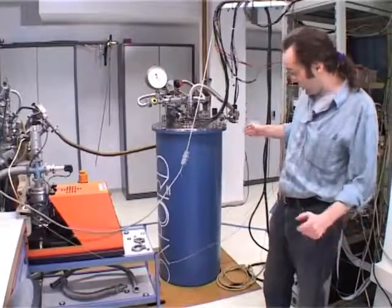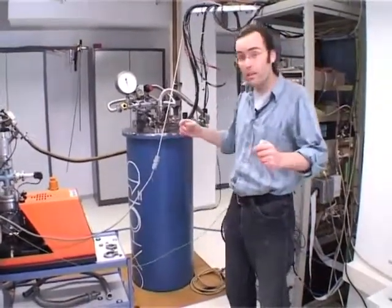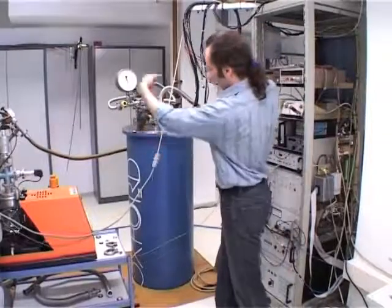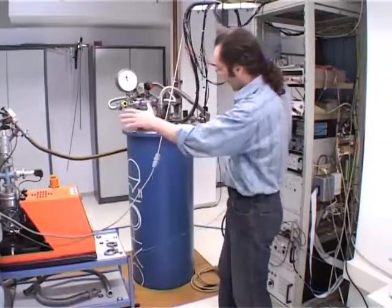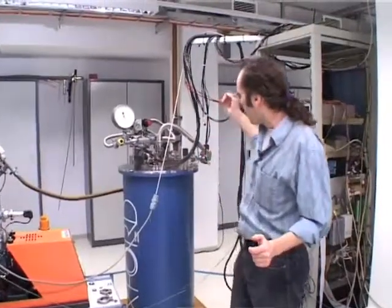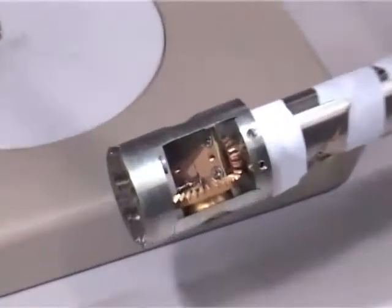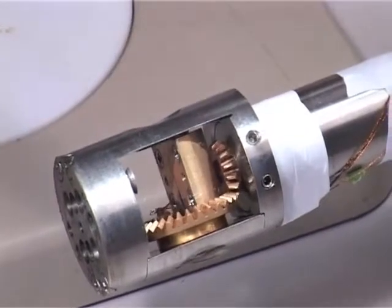This cryostat is equipped with a Helmholtz split coil magnet. So there are two magnets, and the magnetic field is horizontal, which makes it easier to make an anisotropy measurement when we rotate the sample this way inside the cryostat. You can see we can make this rotation around this horizontal axis.